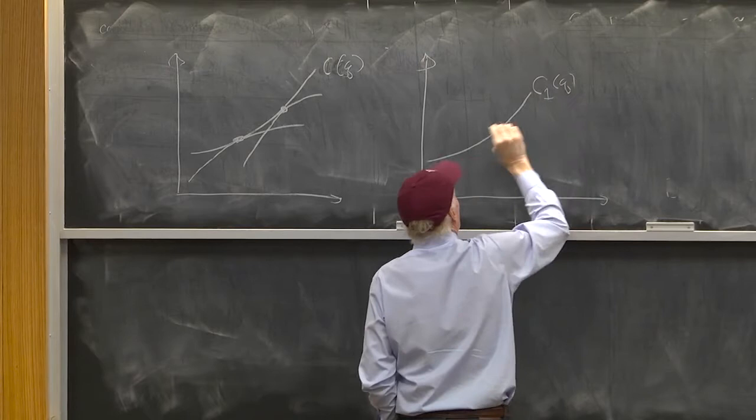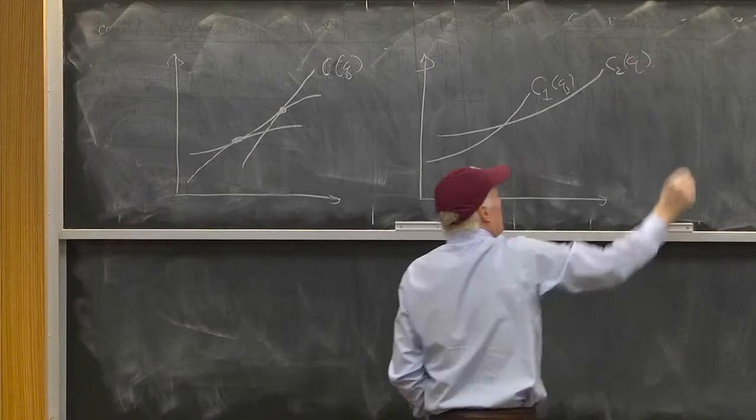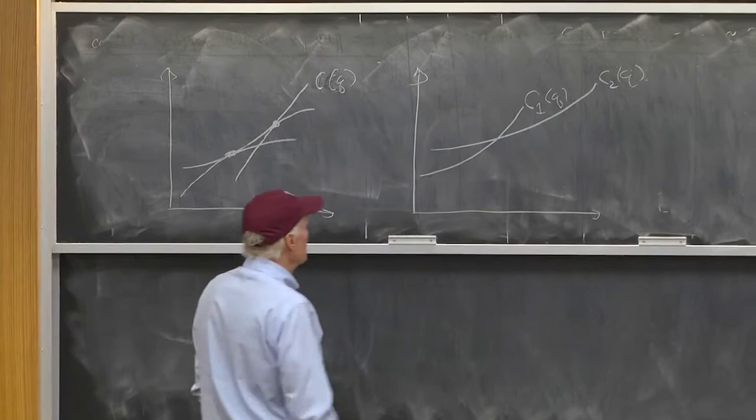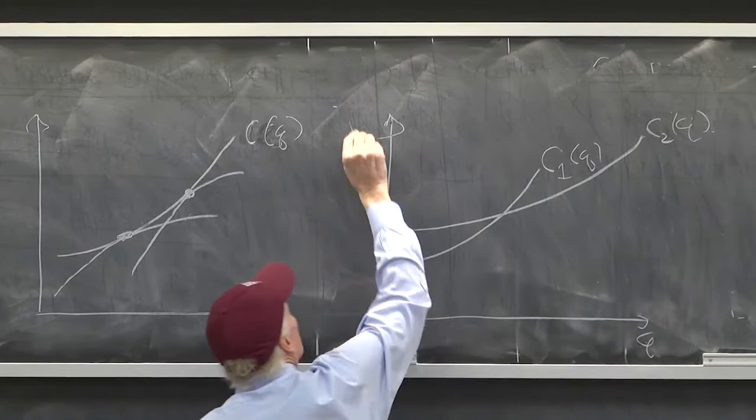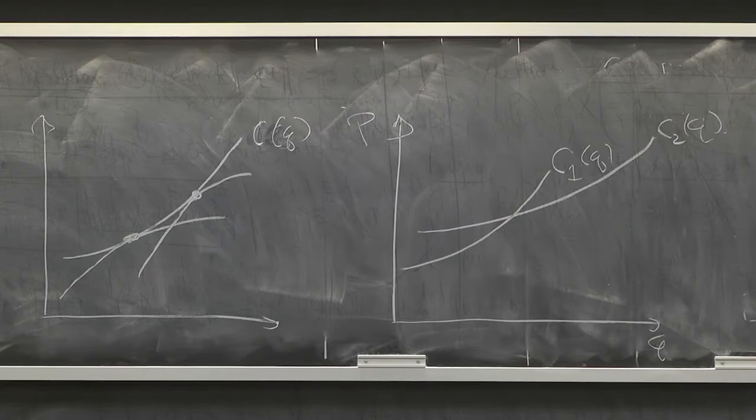So you might call this C1 of Q. And this one would be C2 of Q. And then if we assumed that there was free entry of both types of firms, that it was enough firms of both types to serve consumers, then what would the equilibrium look like? What would the equilibrium look like? We assume all consumers are the same. There's tons of potential firms of type 1 and tons of potential firms of type 2. What would the equilibrium look like?